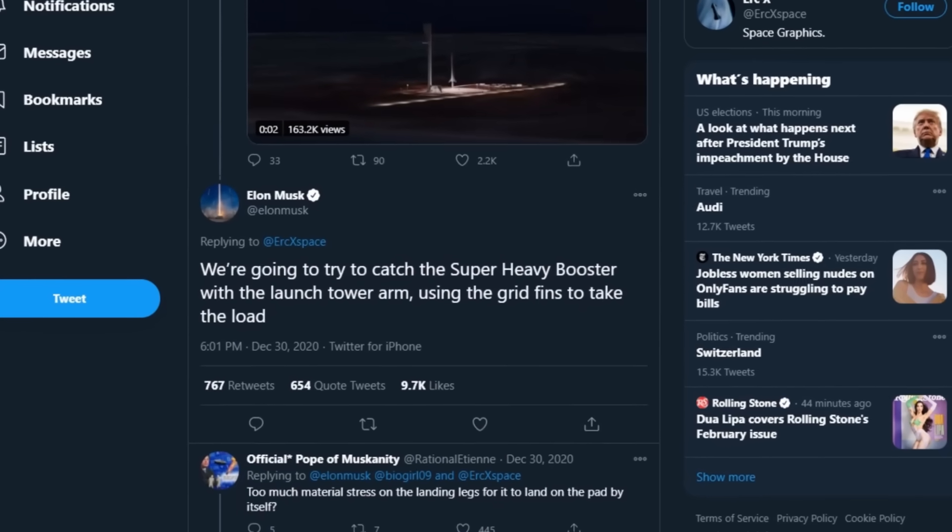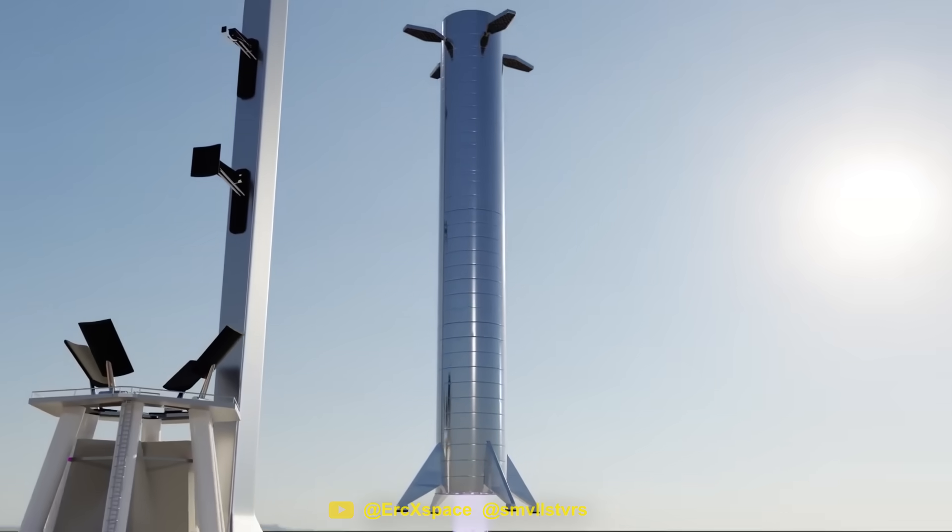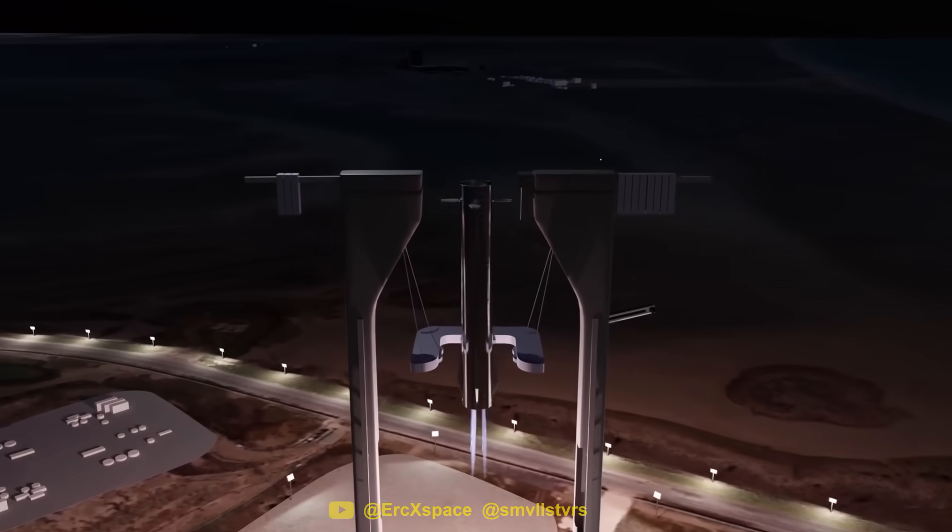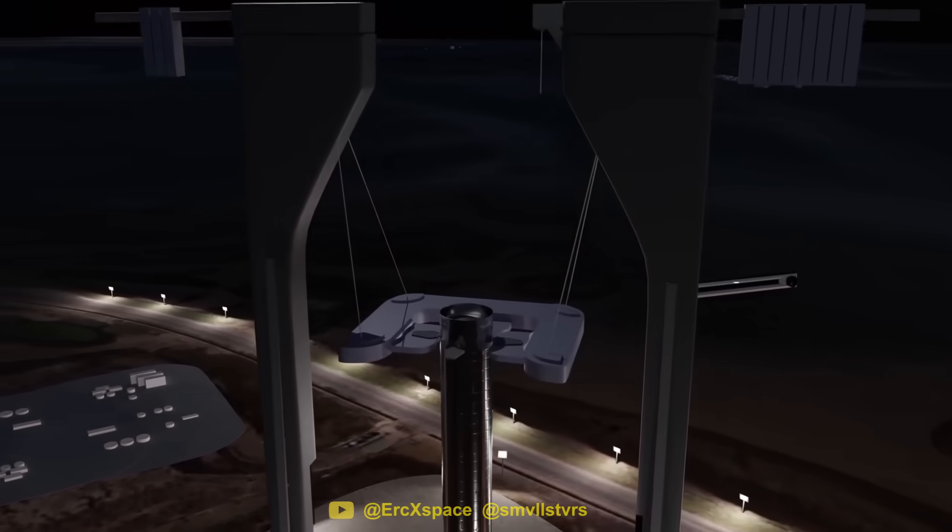On Twitter, Elon casually announced a new plan to land the Super Heavy booster. But the plan isn't to land Super Heavy at all. Instead, SpaceX wants to catch it out of the air as it makes its final approach over the launch mount.